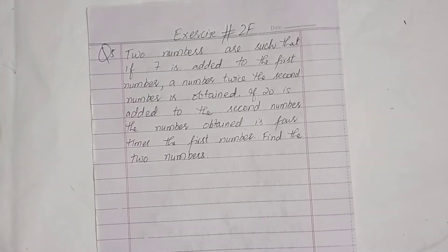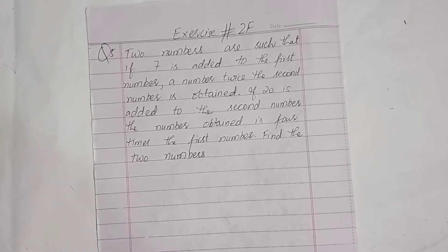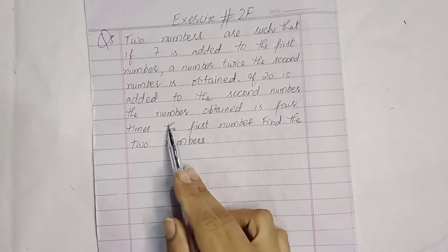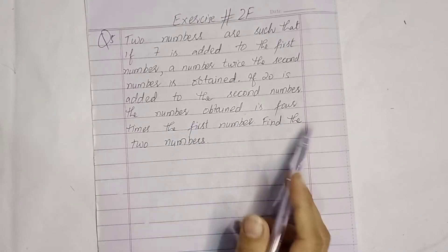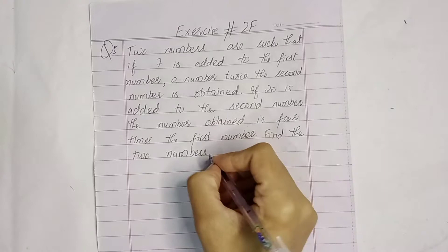Let's start student. Question number 5. Two numbers are such that if 7 is added to the first number, a number twice the second number is obtained. If 20 is added to the second number, the number obtained is 4 times the first number. Find the two numbers.